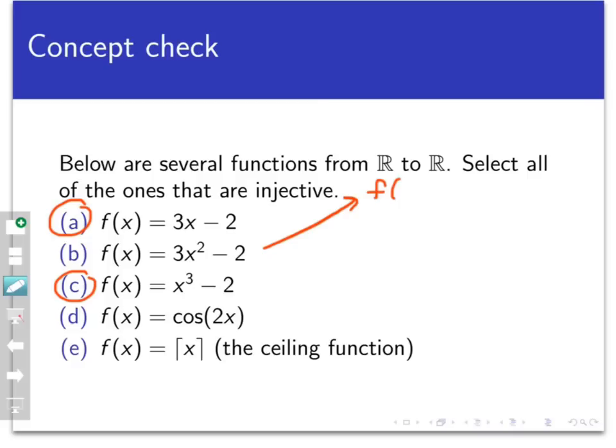With the function in B, we are squaring. So for example, you could look at x equals 2 and x equals negative 2. Those are certainly different points in the domain, but notice they both map to the same point in the codomain. So that is a collision, and therefore this function is not an injection.